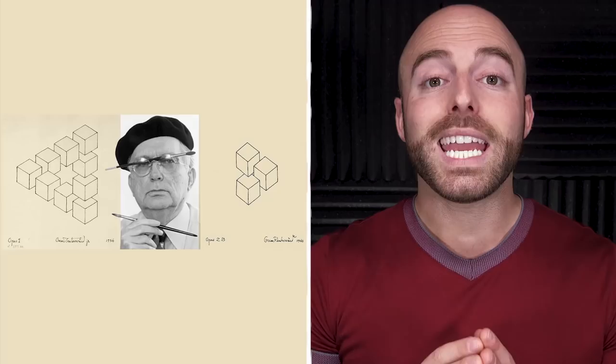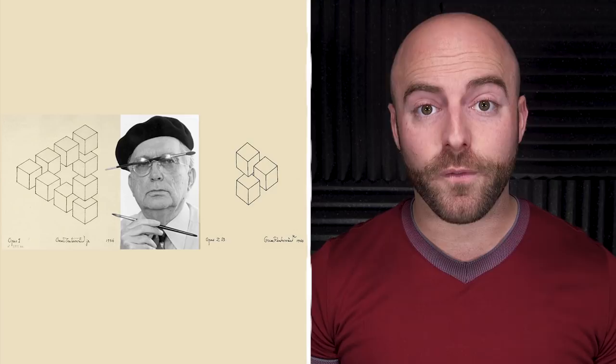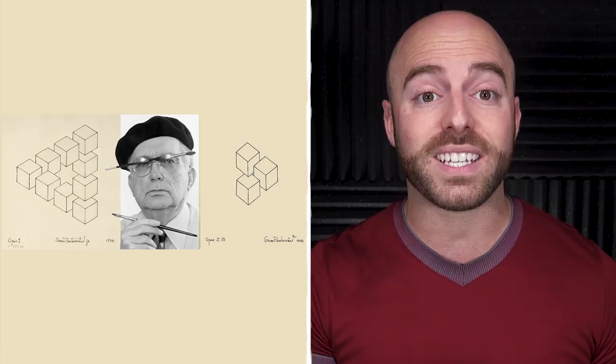The Penrose Triangle, or Penrose Tri Bar, is a paradox illusion or an impossible image. It was first designed in 1934 by the Swedish artist Oskar Rudesvard and made popular in the 1950s by the mathematician Roger Penrose, and were common in the work of the artist M.C. Escher.